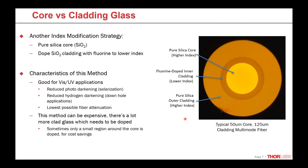The pure silica core is how you achieve the lowest attenuation fiber. The downside is it can be expensive — most fibers have a lot more cladding glass than core glass, so doping the whole cladding rather than just the core is more expensive. Sometimes what we do is only dope a small section of the inner cladding with fluorine to lower that index — that's all you need for the correct waveguide function — and the rest of the cladding can be made of pure silica.